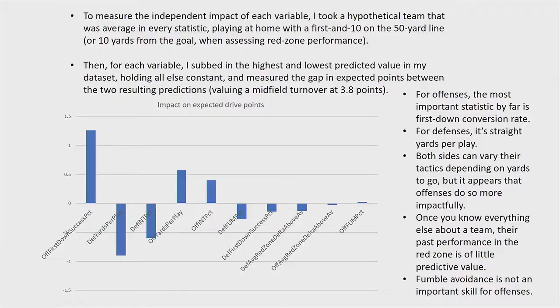To see what our fancy model actually produces, I conducted a little experiment. I took a completely neutral situation — 50-yard line, first and 10, team playing at home, two teams exactly average in every statistic. Then for each variable, I substituted in the best and worst prediction for that variable in my dataset, subtracted the difference, and measured it in expected points. For offenses, the single most important statistic is converting first downs into future first downs. For defenses, it's straight yards per play.